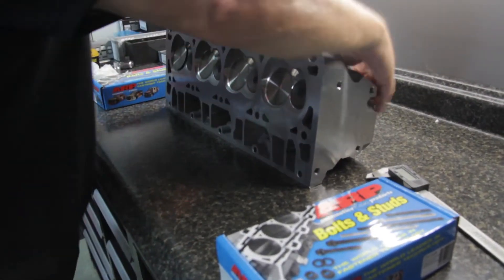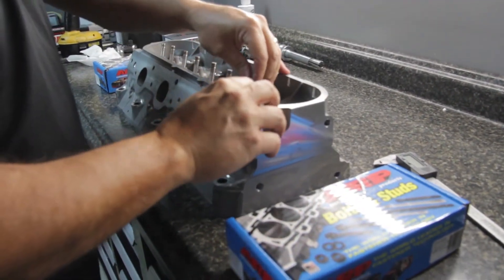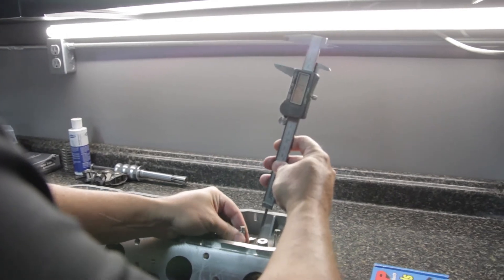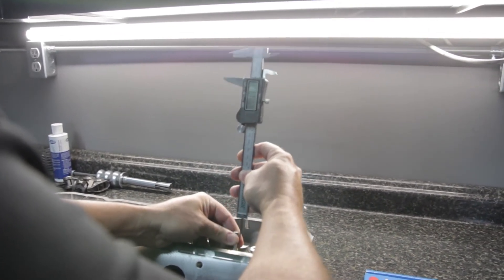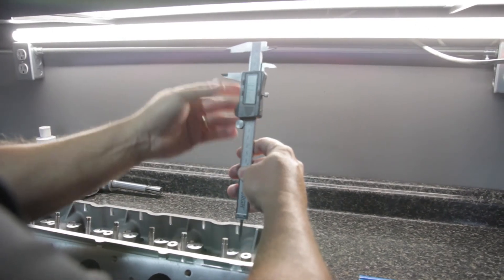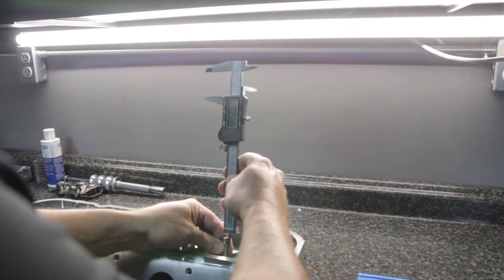The other method for checking valve free drop is using a caliper. You pull the valve all the way up and bring the dial indicator down to the valve tip.